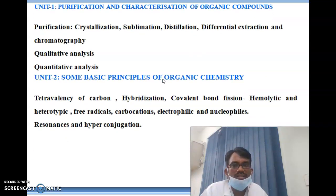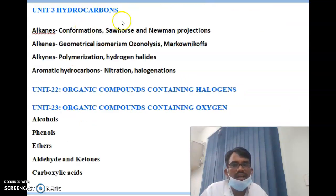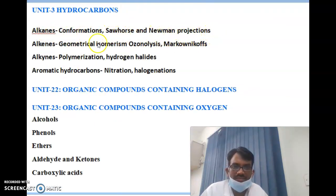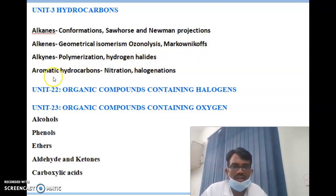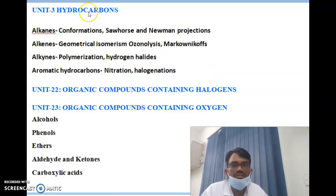Unit 3 is hydrocarbons: alkanes — conformation, Sawhorse and Newman projections; alkenes — geometrical isomers, ozonolysis, Markovnikov's rule; alkynes — polymerization and addition of hydrogen halides; and aromatic hydrocarbons — nitration and halogenation.